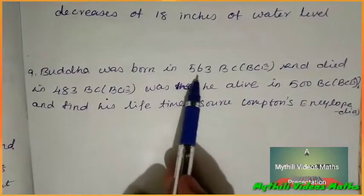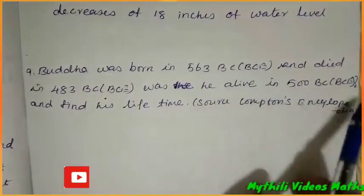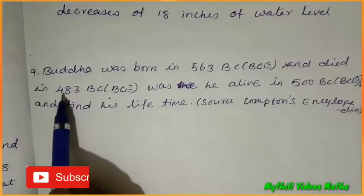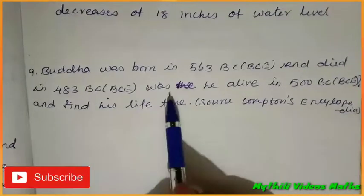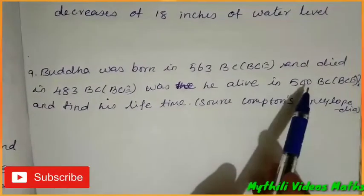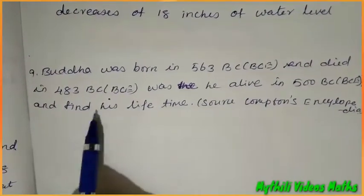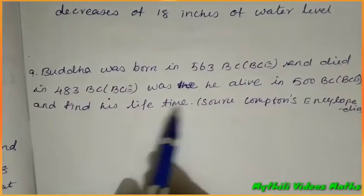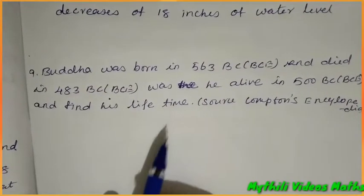Buddha was born in 563 BC and died in 483 BC. So was he alive in 500 BC? We also need to find his lifetime — that is what we have to determine.